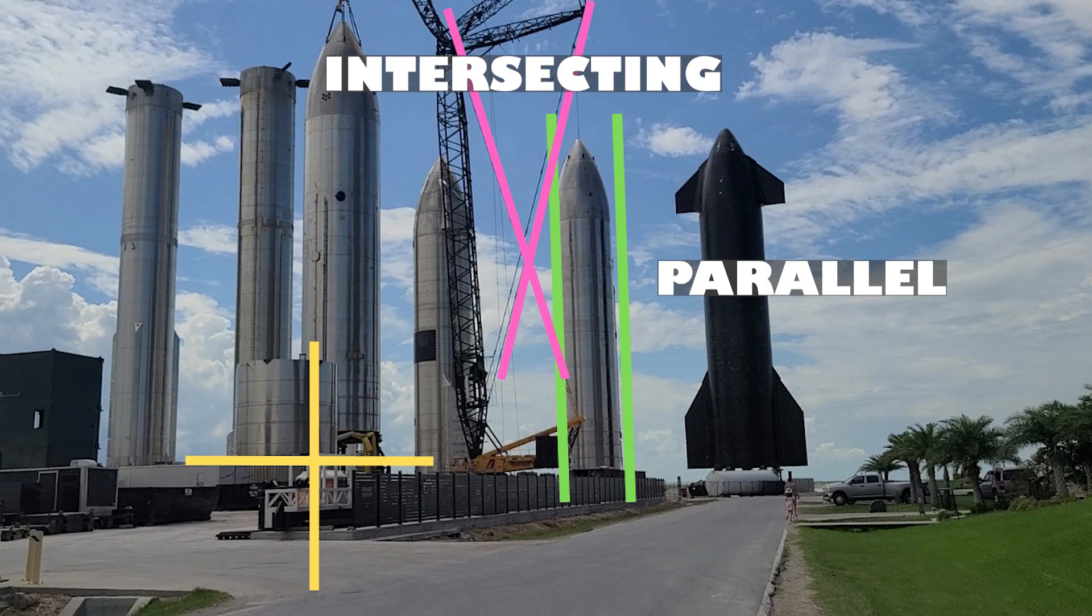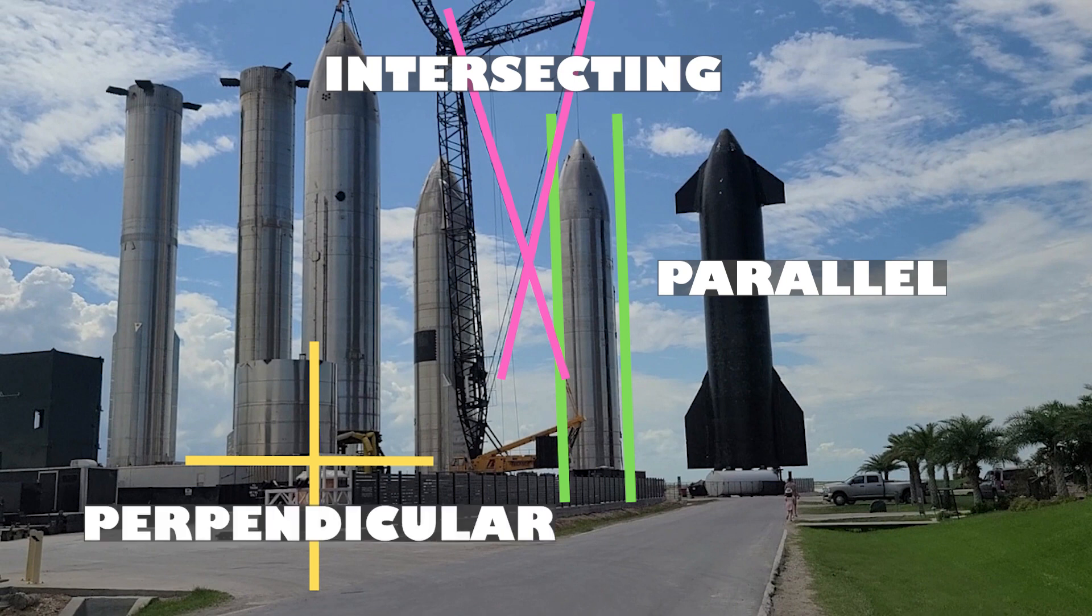Now last one. What about the yellow lines? What can we call those? Awesome. Perpendicular because they cross and they form square corners or right angles. Great job.